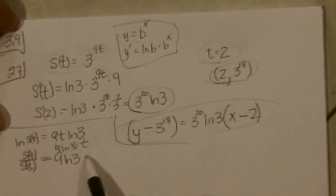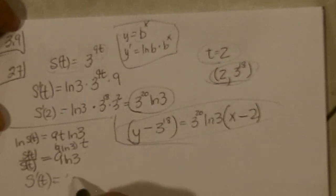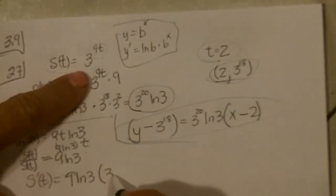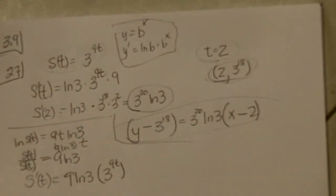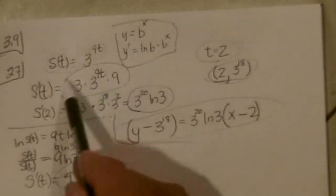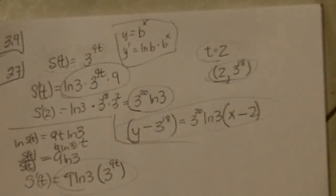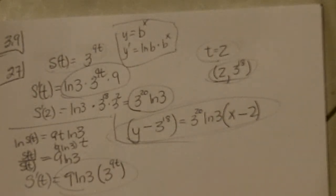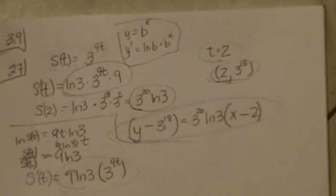And then I bring S of T, multiply it times the other side. So S prime of T would be 9 natural log of 3 times what S of T was, which is 3 to the 9T. And that's exactly what we had before for the derivative. Then we would plug in the 2 again and get the same equation. Okay, that's 27.